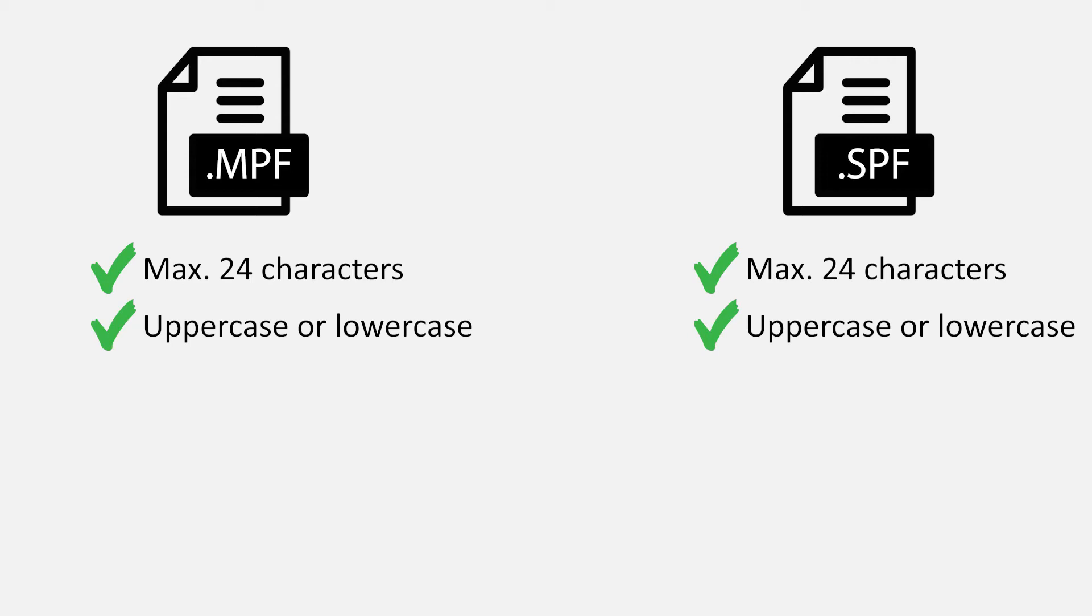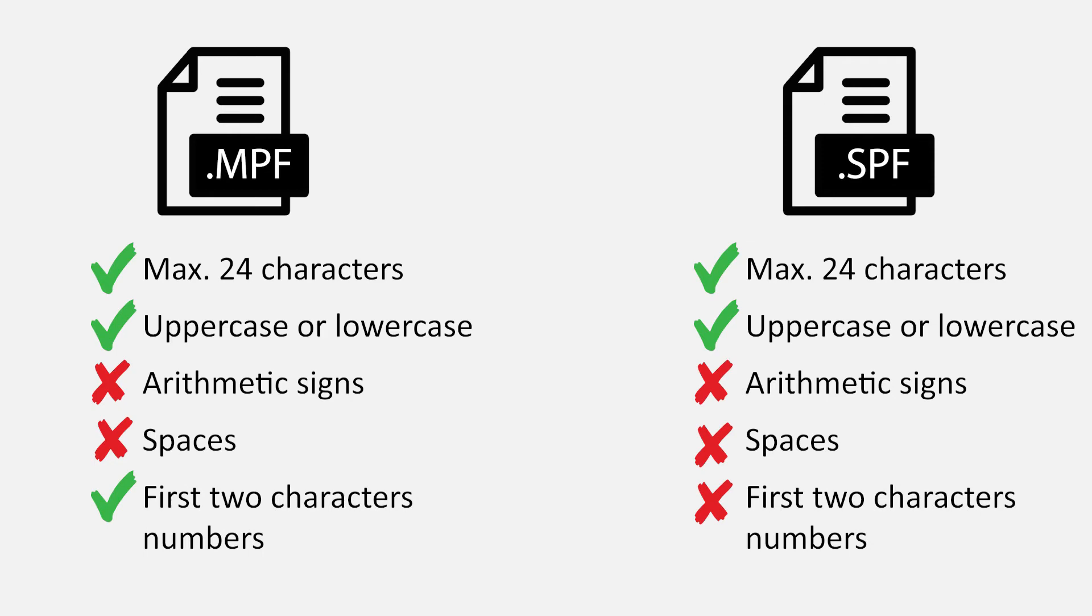They may not contain arithmetic signs and may not contain spaces. For subprograms, the first two characters must be letters or possibly underscores. If you only want to use numbers, again speaking of subprograms, then you have to prefix them with a letter L, example L100. But please note that in this case, there must be no letters other than L.